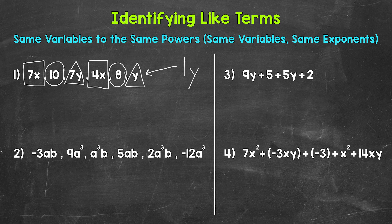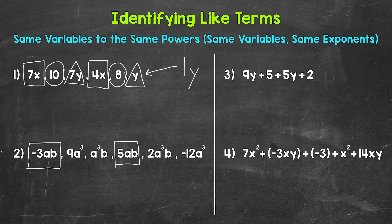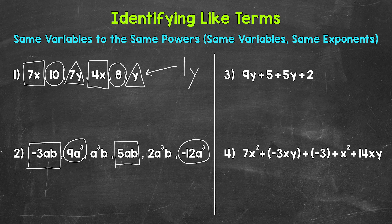Let's move on to number 2 where we have another 3 pairs of like terms. We'll start with negative 3ab — let's box that in and find the like term. We need those variables of a and b, both to the power of 1. The like term is 5ab. Next, we have 9a cubed, so we need a variable of a to the power of 3. Let's circle this term, and the like term is going to be negative 12a cubed. You can see that variable of a to the power of 3 makes those like terms.